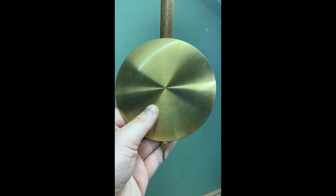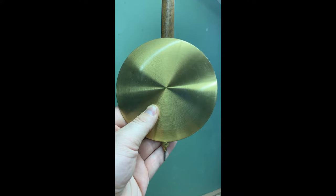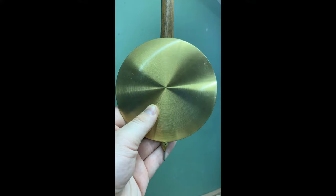Next locate the adjustment nut at the bottom of the pendulum disc. By raising or lowering the disc you can speed up or slow down your clock. To raise or lower this disc you'll need to turn the adjustment nut.